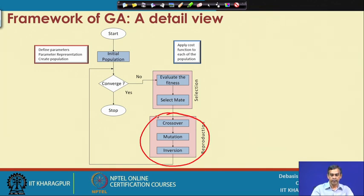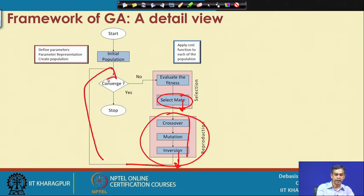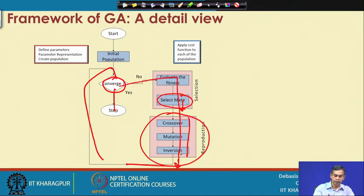Reproduction involves a few steps: reproduction by crossover, reproduction by mutation, and reproduction by inversion. This reproduction process produces offspring from a mating pair, resulting in one or more new individuals called offspring. These offspring produce the next generation. The next generation is again tested whether it achieves the best result. If yes, we stop; if no, we repeat the same procedure until the convergence criteria is satisfied.